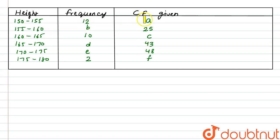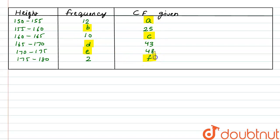So we have to find the values of A, B, C, D, E and F. The first cumulative frequency entry is A, so A would be equal to the first frequency, which is 12.